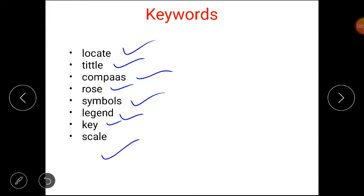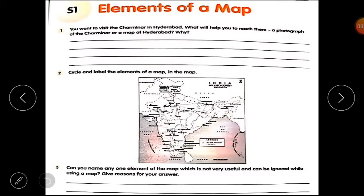Now please open your worksheet. S1: Elements of a Map. First question: you want to visit the Charminar in Hyderabad. What will help you to reach there — a photograph of the Charminar or a map of Hyderabad? Why? A map will help us because a map is a drawing of the earth or a part of the earth on a flat surface. Maps are used for many purposes, such as helping people travel from one place to another. A photograph shows the picture of a place but does not give any information. A map gives us all the information about a place.